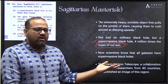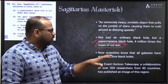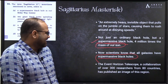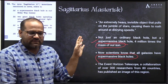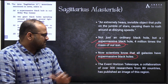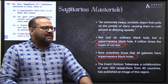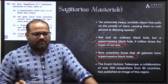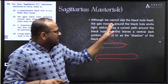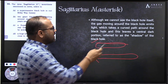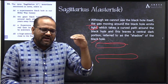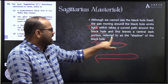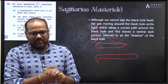Scientists now know - and this is what earned them the Nobel Prize in Physics - that all galaxies have supermassive black holes. This discovery was made with the help of the Event Horizon Telescope, a collaboration of 300 researchers from 80 countries. They published the image of the particular region referred to as the shadow of the black hole, with the central portion left dark - the black hole's shadow.